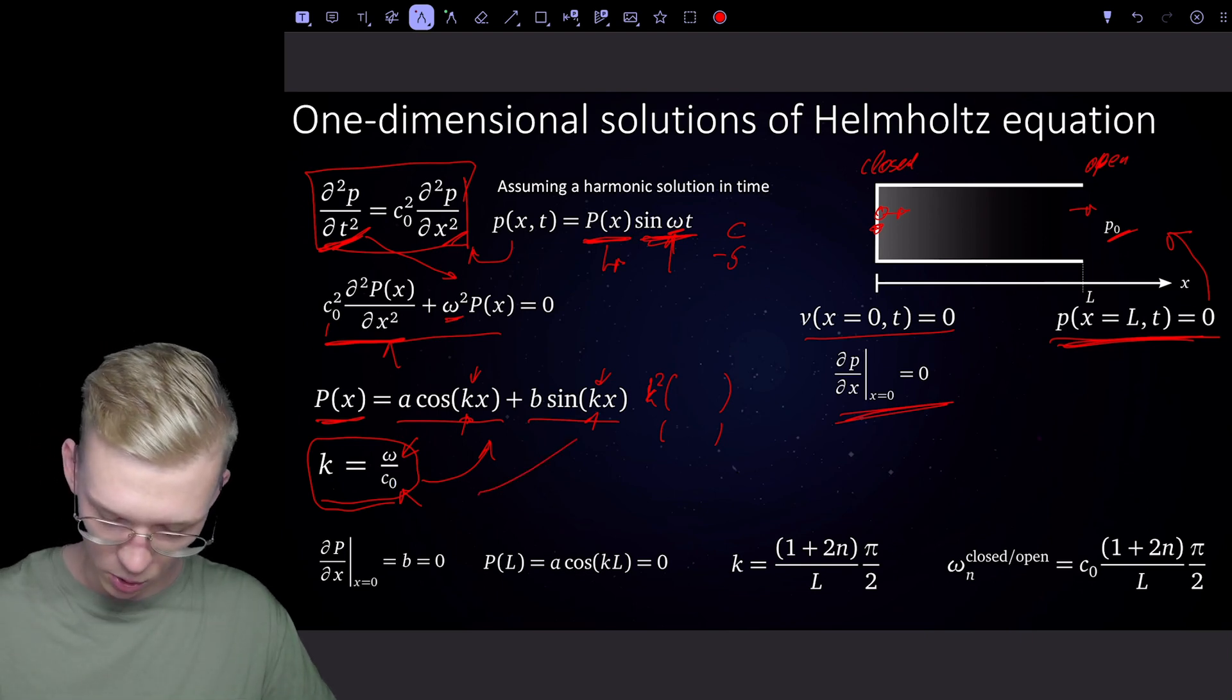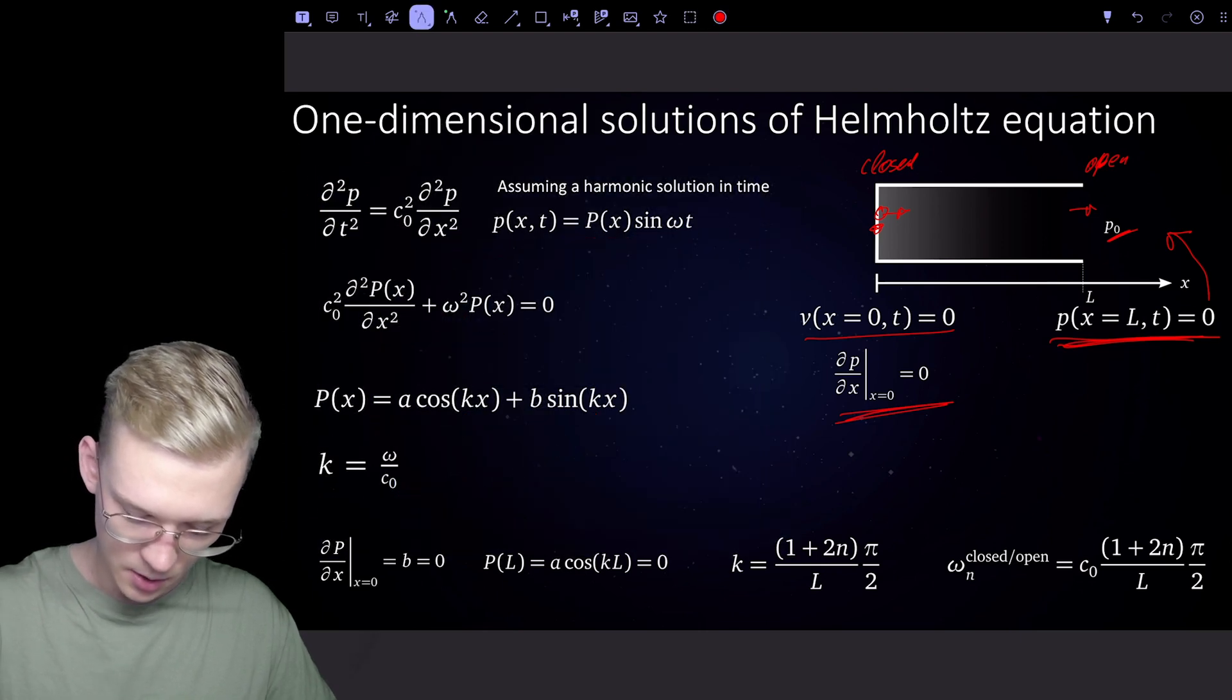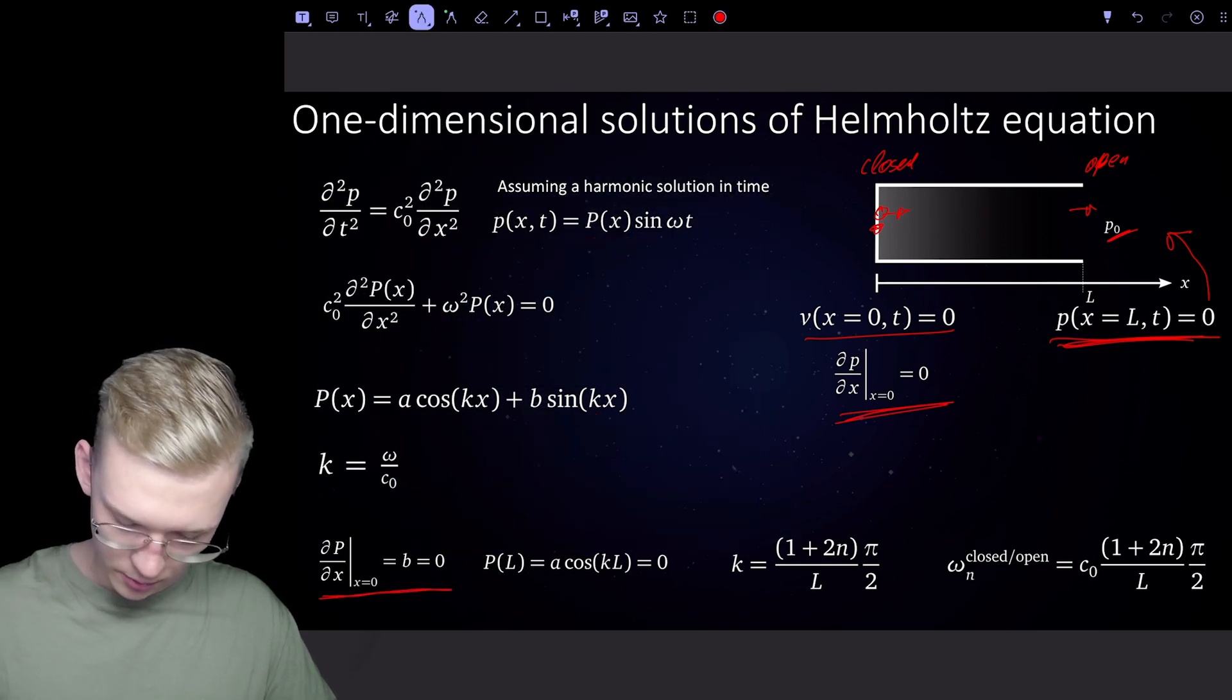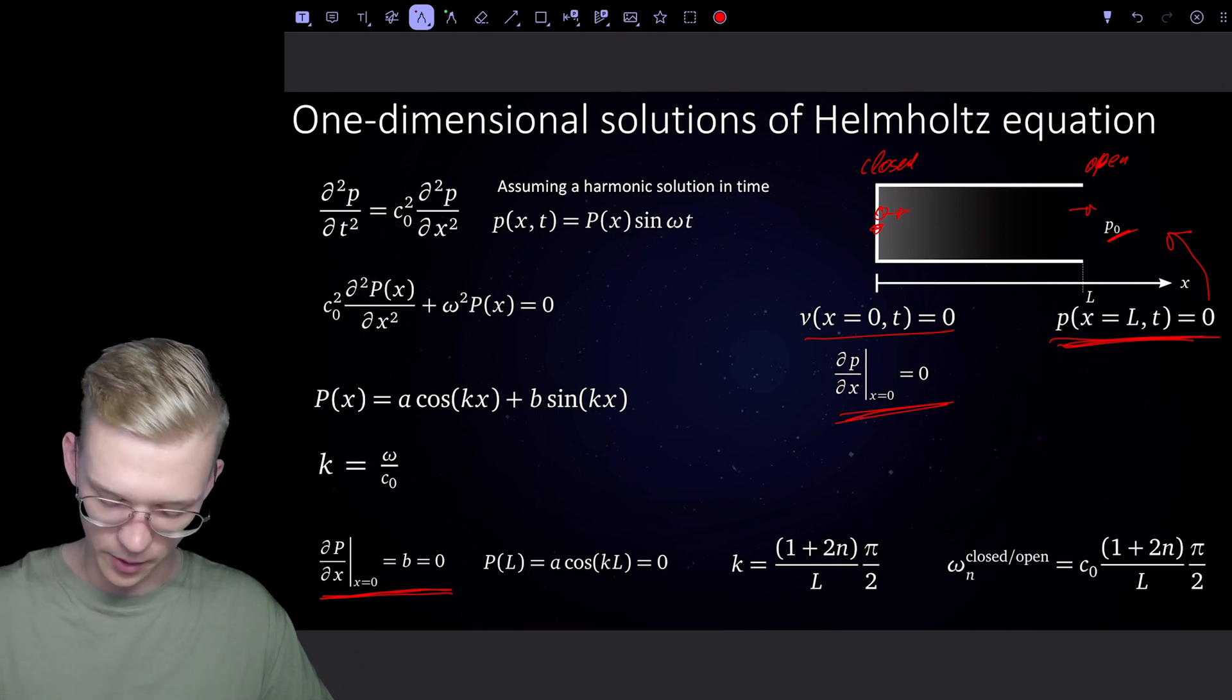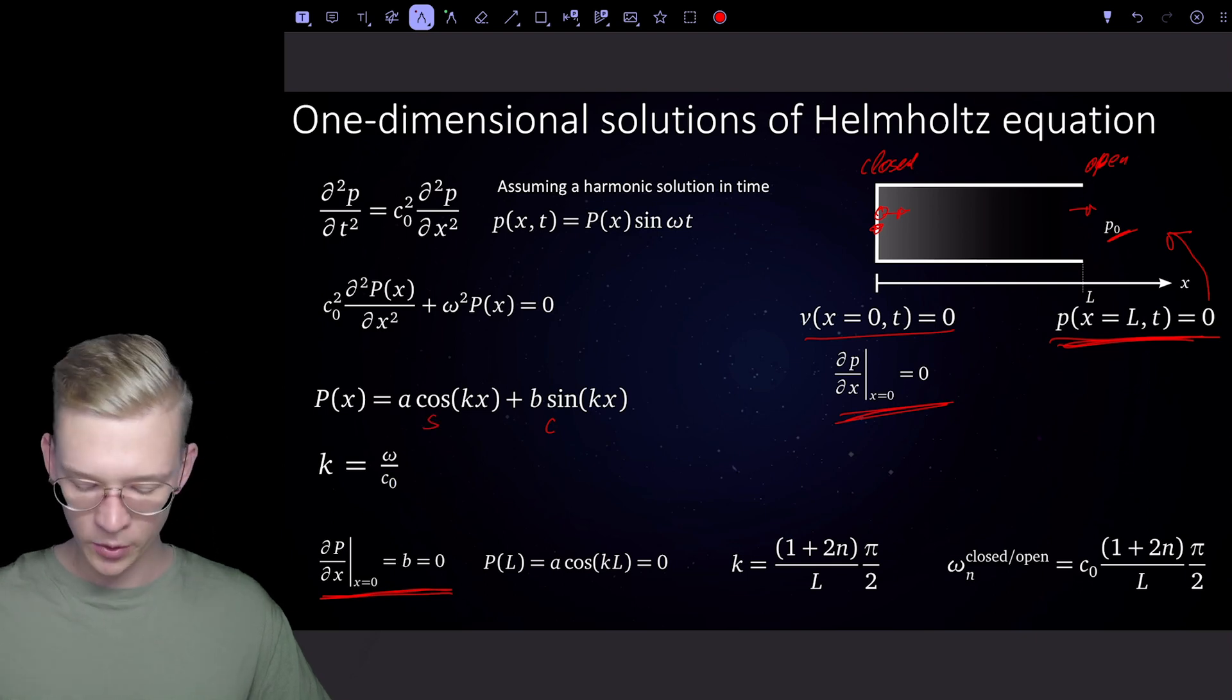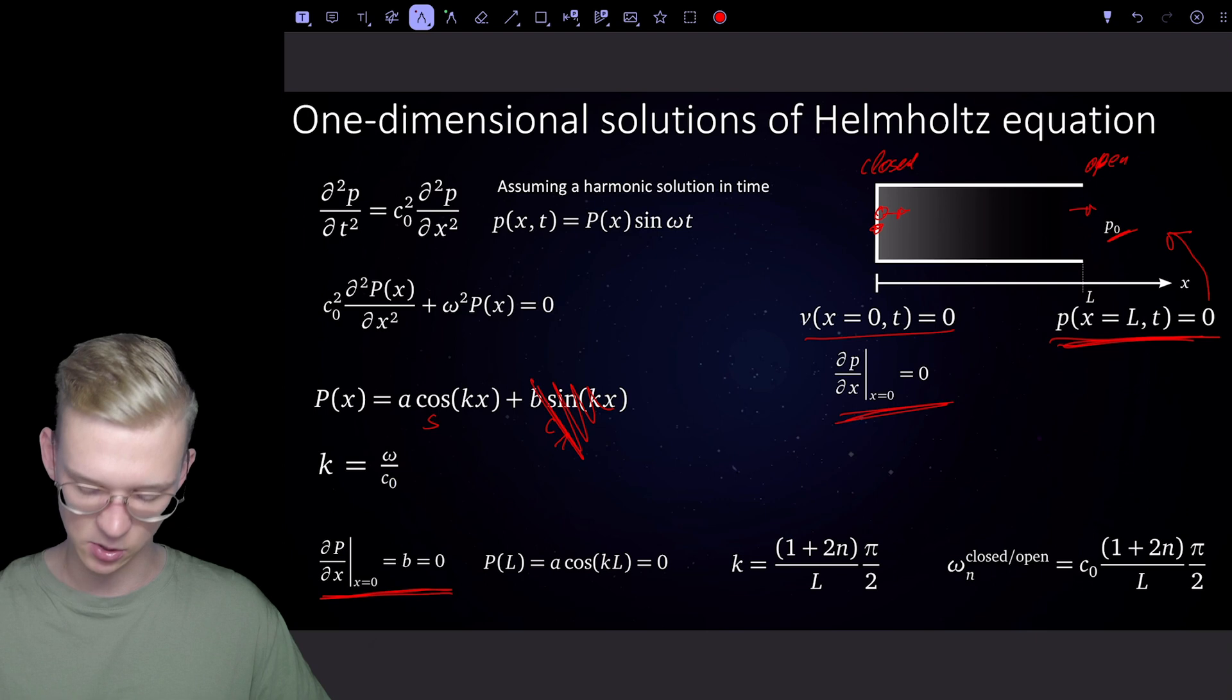So now we know that the pressure gradient at zero must be zero. We derive it once, we get a cosine here and a sine. We insert zero because we're at x equal to zero. This will be one, but we need it to be zero. So b is equal to zero and this is gone.